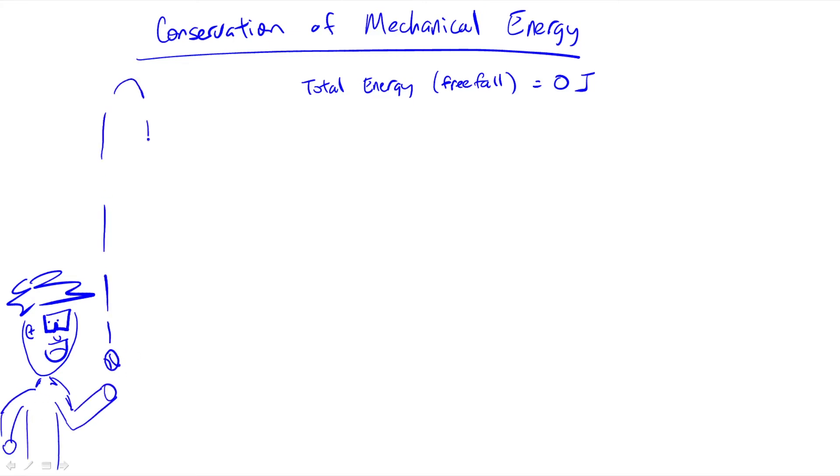So an upwards tossed object starts free falling right here. We can say that the change in kinetic energy plus the change in potential energy nets to a value of zero. Arguably, we can say that the work of a free falling object is also equal to zero.